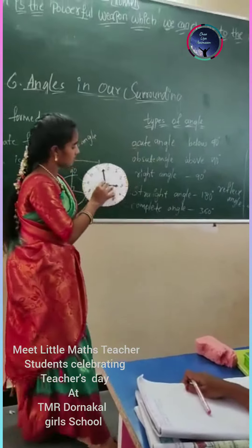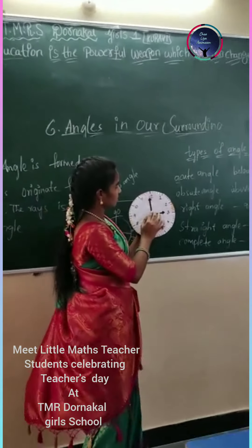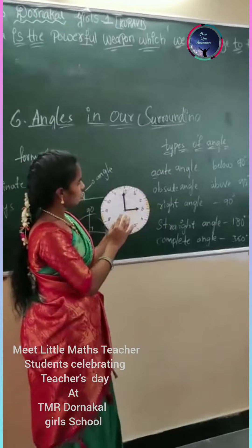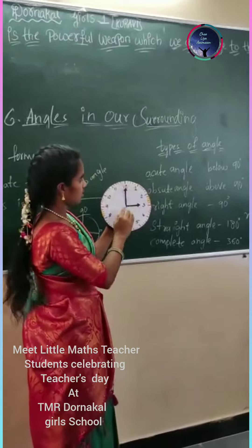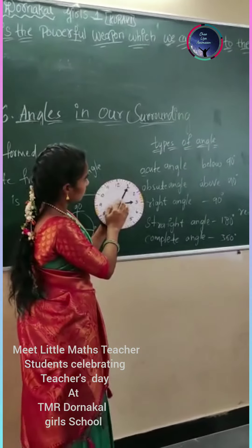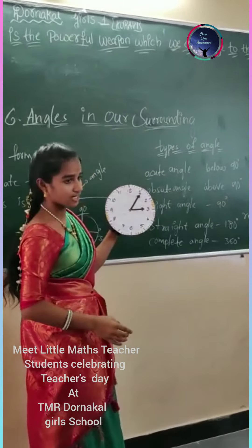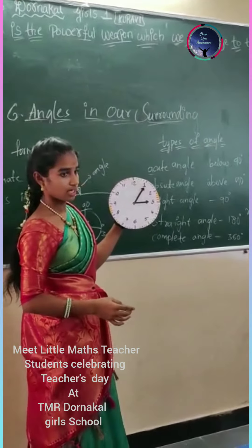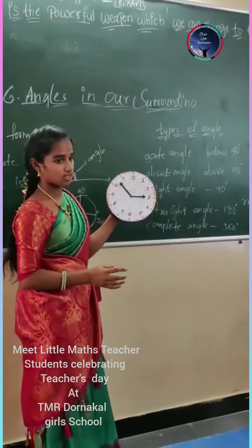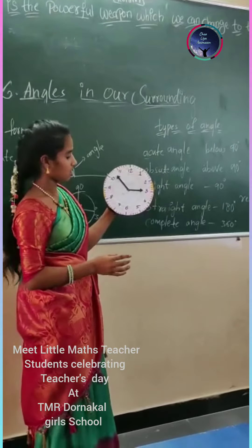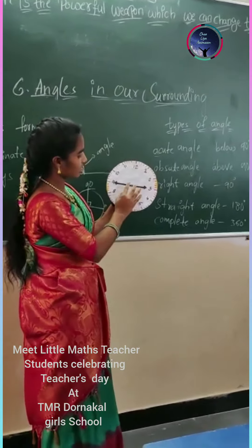I will show you in this. See here — what is this angle? Right angle. What is this angle? Below 90 degrees — that is the acute angle. Obtuse angle is above 90 degrees. Exactly 180 degrees is the straight angle.